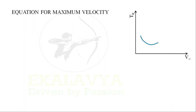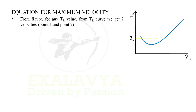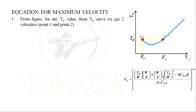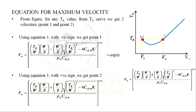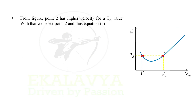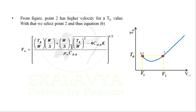For the equation of maximum velocity: from the thrust-required (TR) curve, for any TR value, we obtain two velocities — point 1 and point 2. The velocity equations derived in video lecture 16 use equation 1 with a negative sign to get point 1 (equation A), and with a positive sign to get point 2 (equation B). From the figure, point 2 has a higher velocity for a given TR value. Therefore, we select equation B: V∞ = [(TR/W)(W/S) + (W/S)√((TR/W)² − 4·CD0·K)] / (ρ∞·CD0) raised to the power of 1/2.